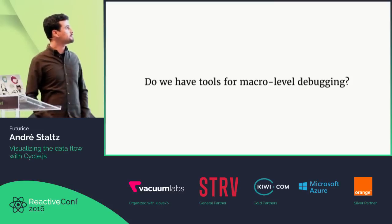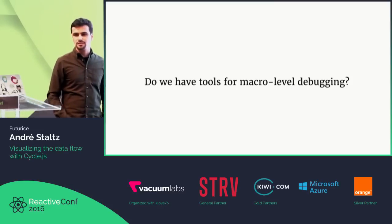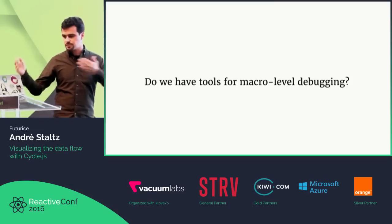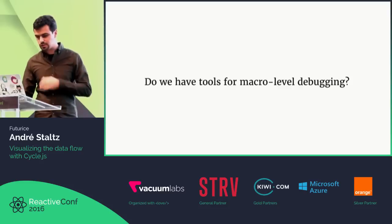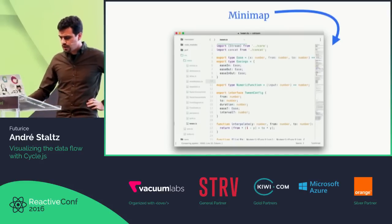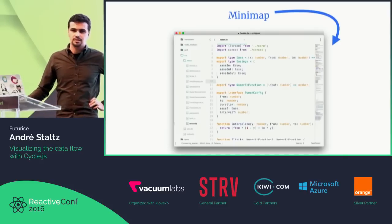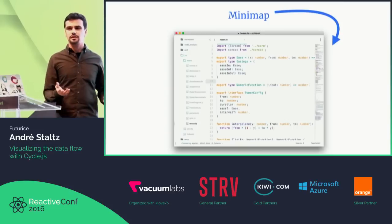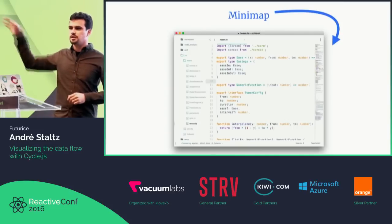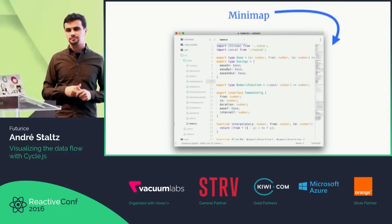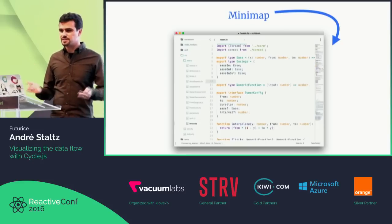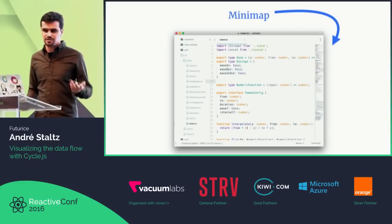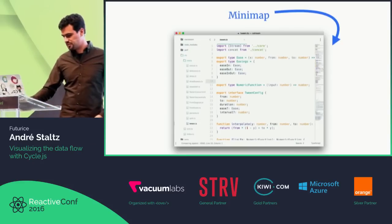So what tools do we have for macro-level debugging — the big picture? The minimap in Sublime Editor tells you that you have a lot of lines of code or a few lines of code — it will never tell you a bug is happening. In the past, we had UML diagrams. Some are very useful, like the sequence diagram. We saw in this conference someone showing how threads in React Native communicate with each other — very useful.